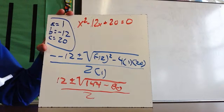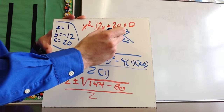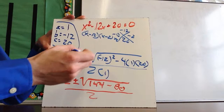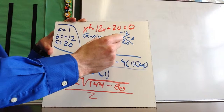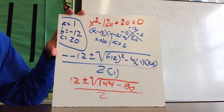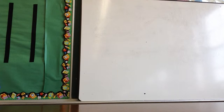Coming back to this problem — you could have factored it using 20 and negative 12, getting x minus 10 times x minus 2 equals 0, giving x equals 10 and x equals 2, the same answers. But we are practicing the quadratic formula. The advantage of a problem like this is you get nice, neat numbers. Now let's talk about what happens when it's not nice and neat.